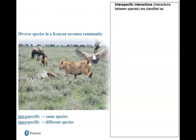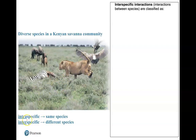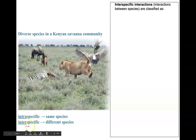Moving on, I want to talk about different relationships between species, whether that's the same species or different species. Because our ecosystems are quite diverse, we have different relationships occurring between all the organisms living in the same area. An intra-specific relationship refers to the same species — for example, mating rituals or competition between the same species. An inter-specific relationship involves different species, and that's the focus of the next part of the lecture.